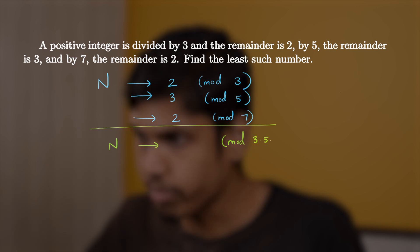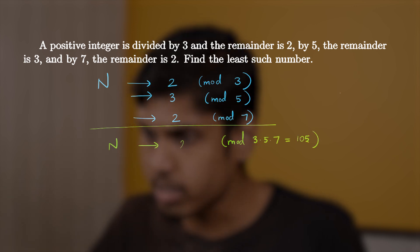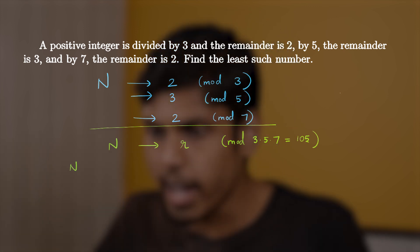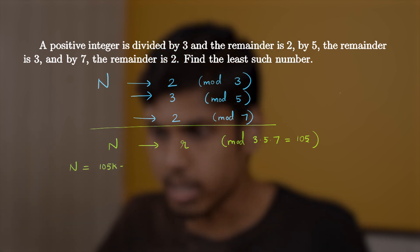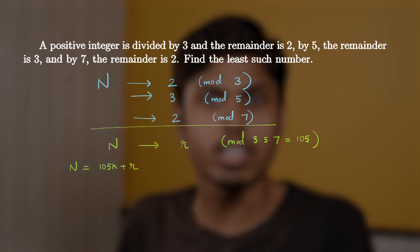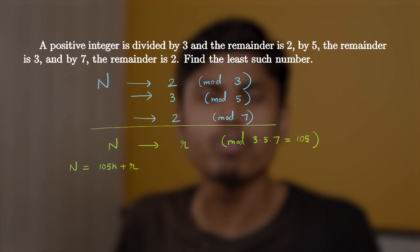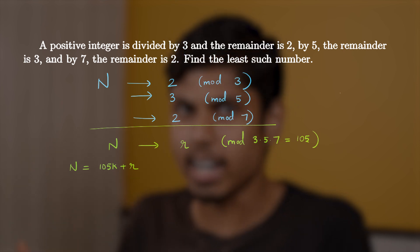So we get 3 times 5 times 7 as 105. And the remainder r when divided by 105 is the actual solution for n. That means n must be of the form 105k plus r. That's it. This is the statement of this theorem. But this is a little bit vague way of saying it. Let me express it clearly at the end.